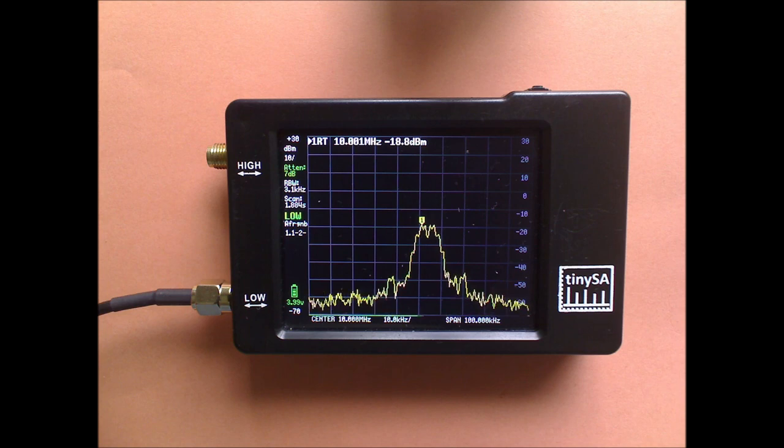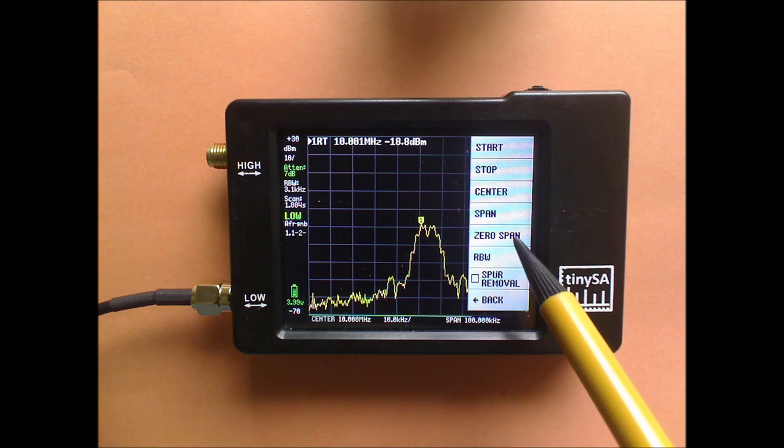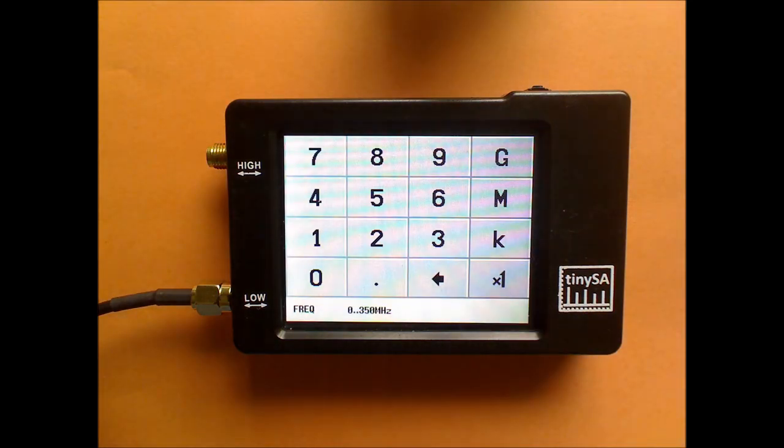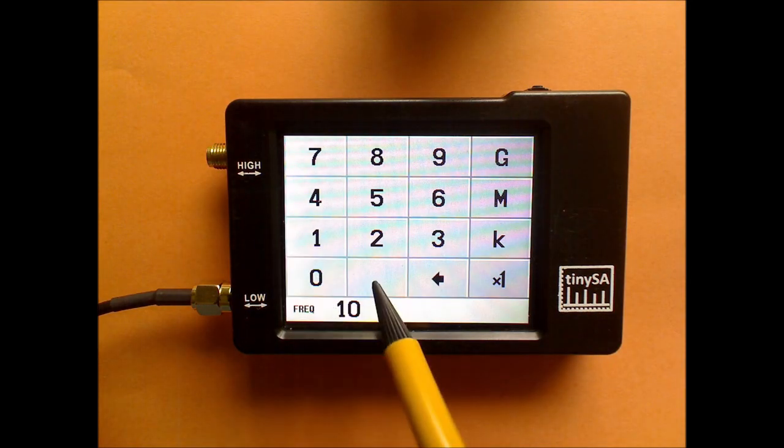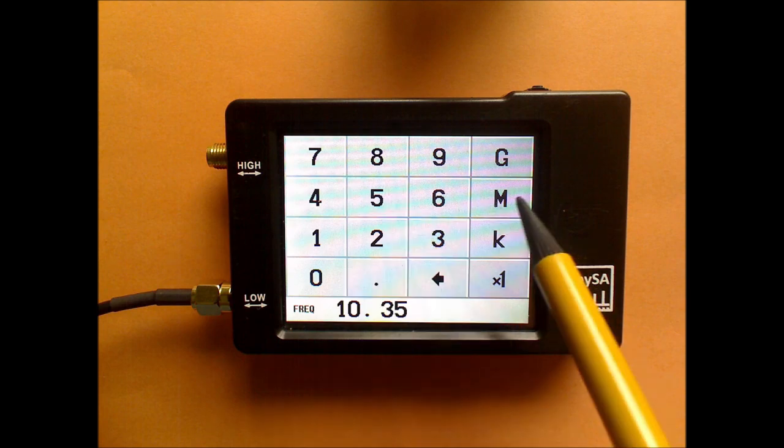But it would, of course, also be nice to be able to watch a demodulated FM signal. Now, officially the TinySA cannot support this. Because you can use zero span mode, but there is no FM demodulator in the TinySA. However, there is a nice trick that we can use. And for that, I will switch to zero span mode, but not to 10 MHz, but to 10.35 MHz.